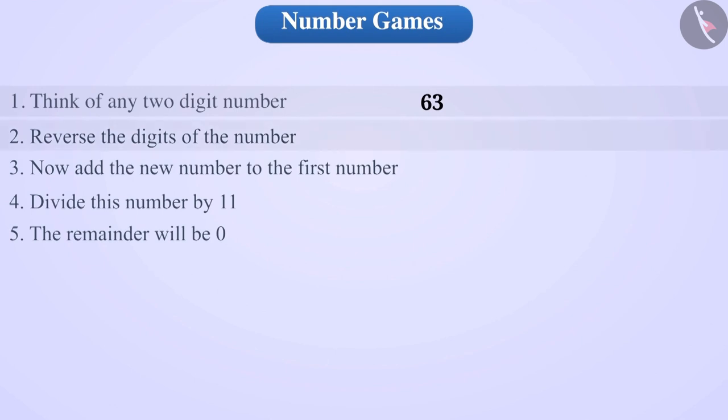Now, by reversing the digits of this number, we get the number 36. Now, add the new number to the initial number. We get 63 plus 36, which is equal to 99.